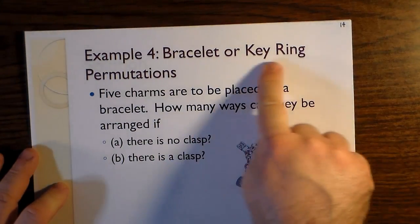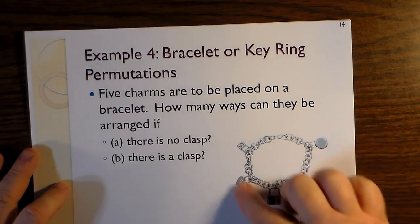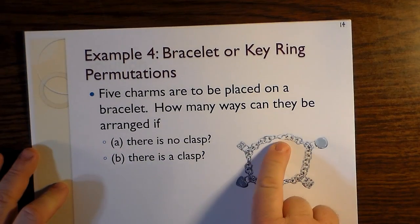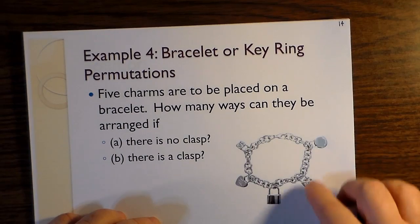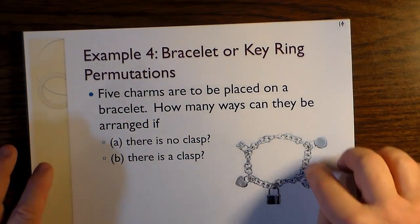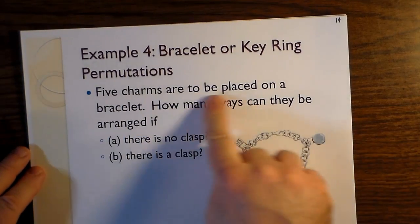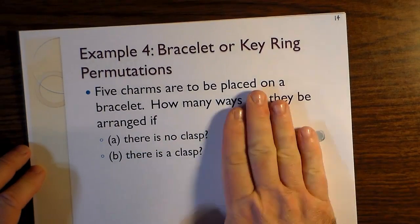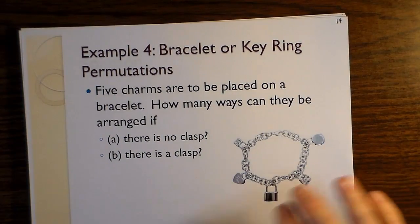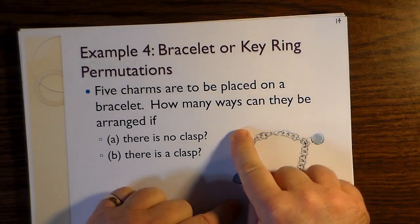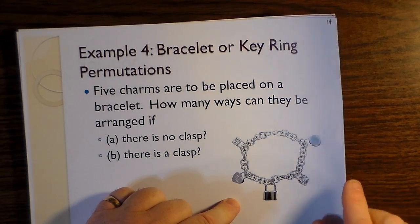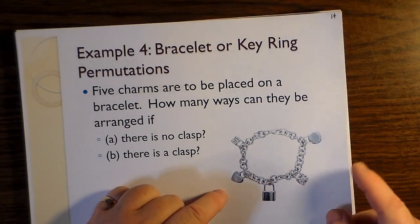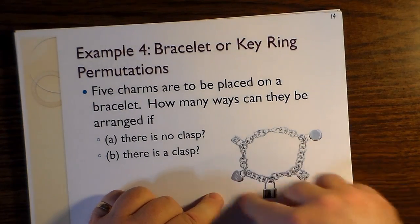Example four. Bracelets or key ring permutations. We're going to choose a bracelet here. There appears to be a clasp on this bracelet, but for part A, we're just going to ignore this clasp and treat this bracelet as uniform. Just as made of a uniform chain, all the links being identical. So five charms are to be placed on a bracelet. How many ways can they be arranged if there's no clasp? Remember, you can flip over this bracelet. So if there's no clasp, it's five minus one, which is four factorial. Four factorial divided by two. So in this case, there are only twenty-four divided by two, which is only twelve arrangements with no clasp.